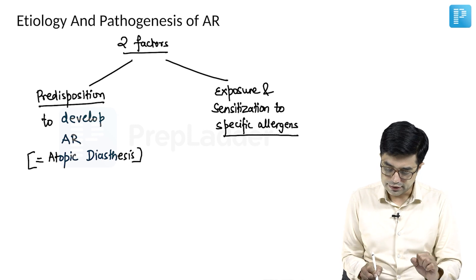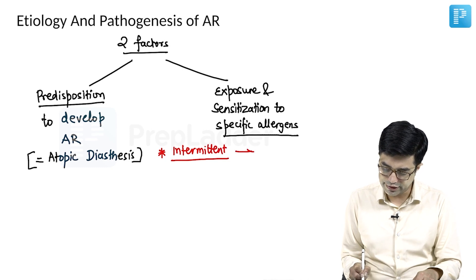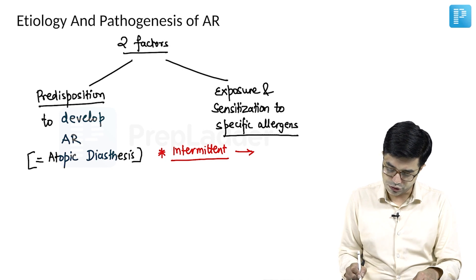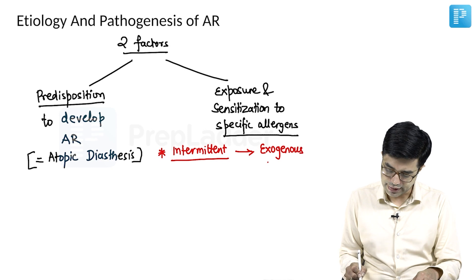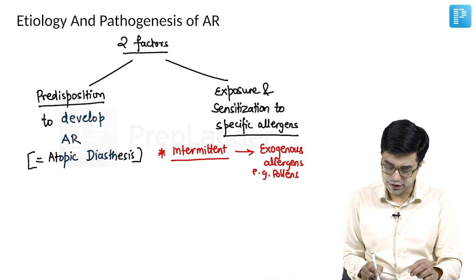Children who have intermittent symptoms — allergic rhinitis is usually caused by exposure to exogenous allergens, for example pollens. So they will have seasonal onset of symptoms.